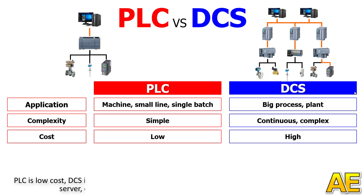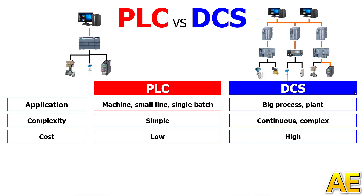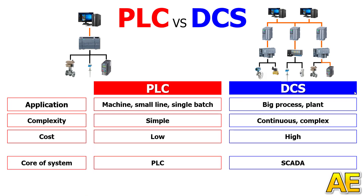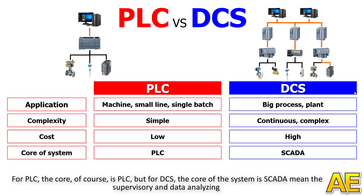The third difference is cost — the PLC is low cost, but the DCS is high cost. We need to pay for many controllers, IO, field devices, a server, computers, network components, and software licenses. The next difference is the core of the system — for the PLC the core is the PLC itself, but for the DCS the core of the system is SCADA, meaning supervisory and data analyzing.